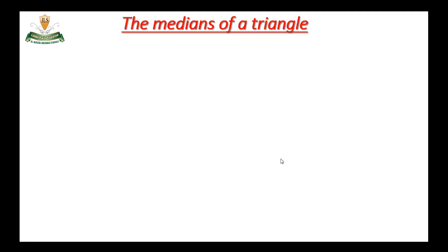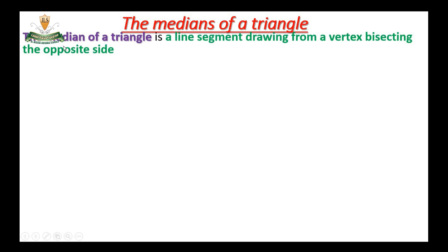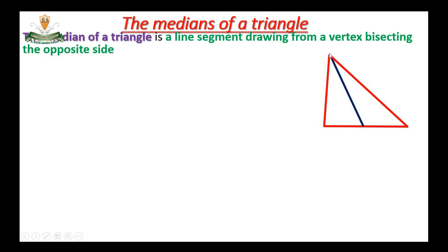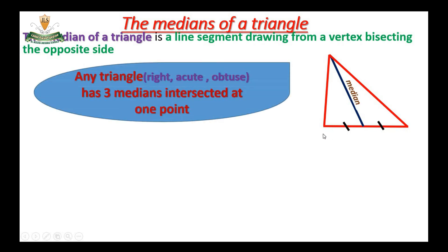Our lesson today is the Medians of a Triangle. The definition of a median: the median of a triangle is a line segment drawn from a vertex bisecting the opposite side. This line comes from the vertex of the triangle and bisects the opposite side. It is called a Median.